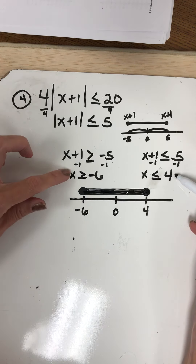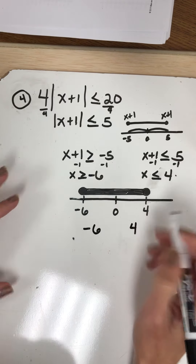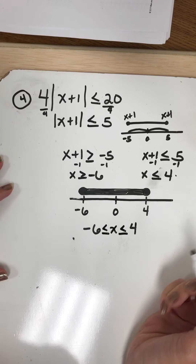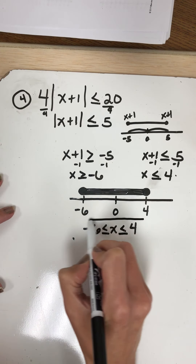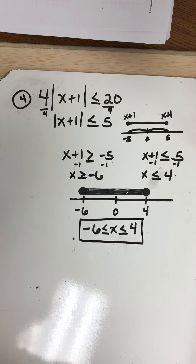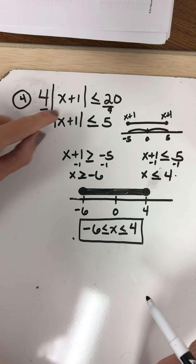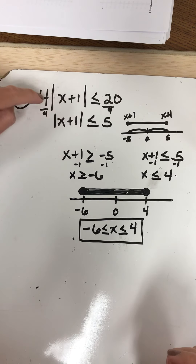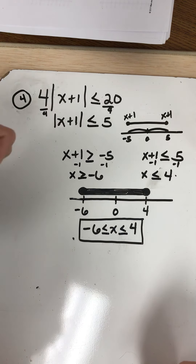If I wanted to rewrite these two inequalities as one, I know that negative 6 and 4 are like my outsides. x is living in between them: x is bigger than or equal to negative 6 but smaller than or equal to 4. Let's check it by plugging back into our equation. I'll pick 0 because it's easy. 0 plus 1 is 1, the absolute value of 1 is 1, 4 times 1 is 4, and 4 is definitely less than or equal to 20. So that one works.